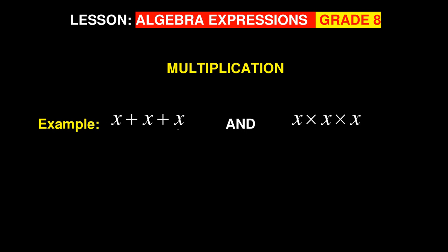Let's look at this first example. If you are adding x plus x plus x, there is a one in front of each x, so you are saying one plus one plus one which is three, and the variable is x, so your answer becomes 3x. Adding them together is like adding cows: one cow plus another cow plus another cow gives you three cows.